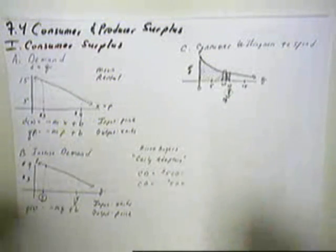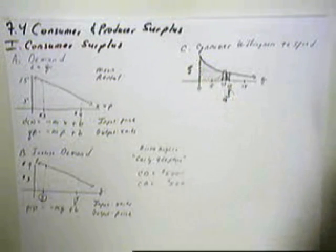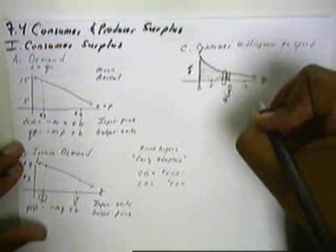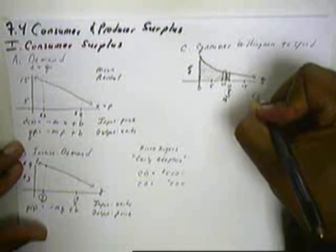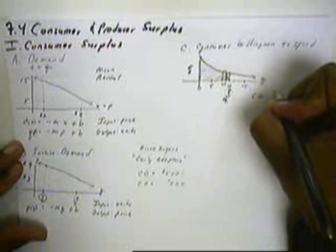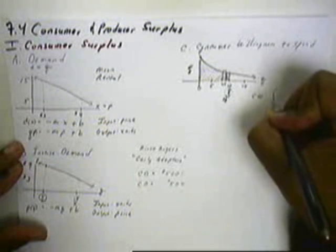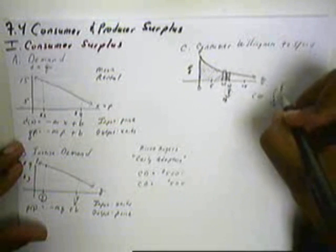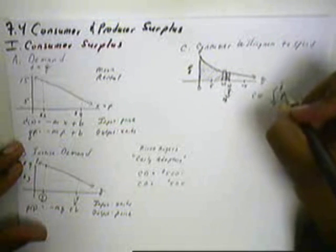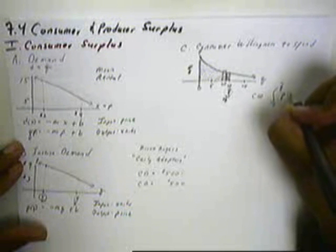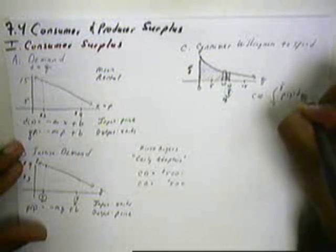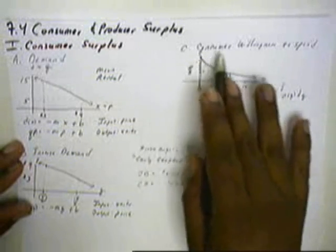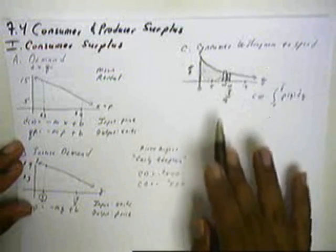Therefore, since we're finding the area under the curve, the consumer willingness to spend would be represented by the integral from zero to that Q of the function P with respect to Q. This will give us all the money that the consumers were willing to spend during this time between zero to Q.